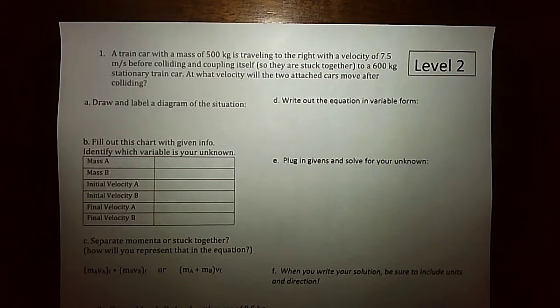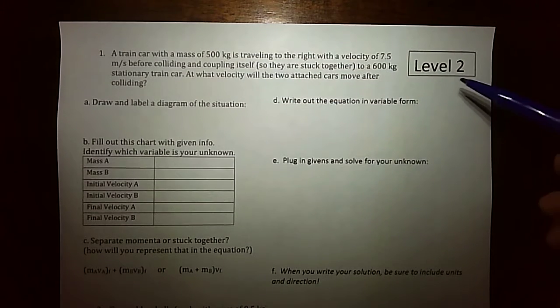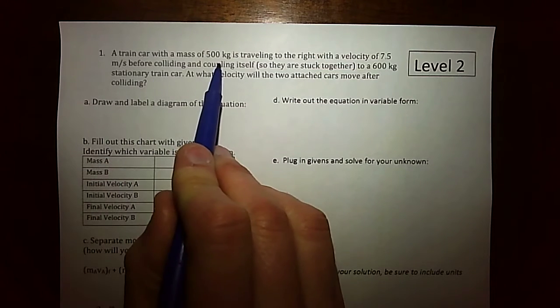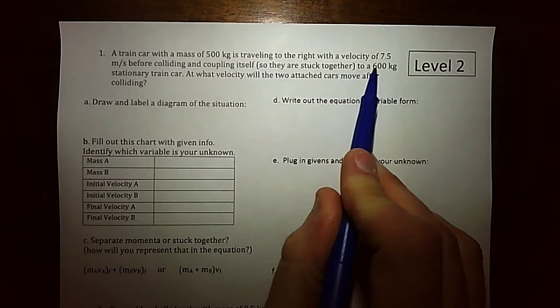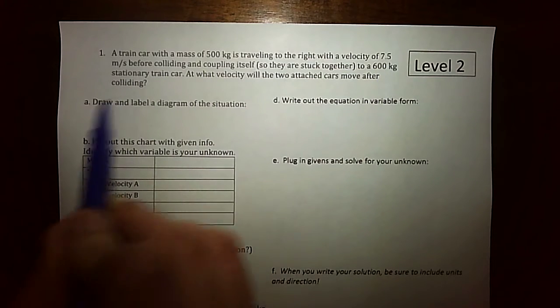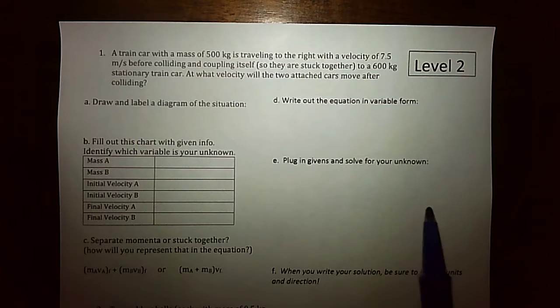Hello everyone, it's Mr. Wolf here and in this video I'm going to be modeling the thinking through the first level 2 problem where a train car with a mass of 500 kilograms is traveling to the right with a velocity of 7.5 meters per second before colliding and coupling itself. So right away I'm going to start drawing and labeling a diagram of the situation.